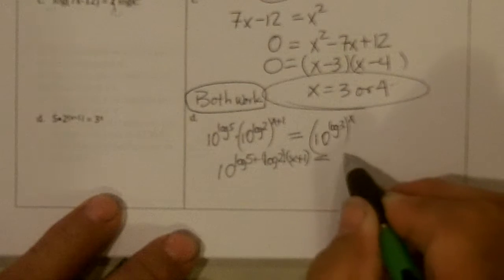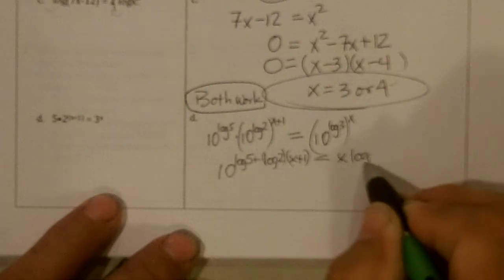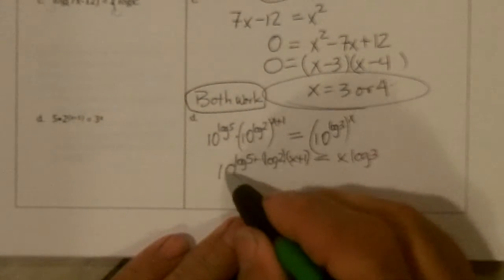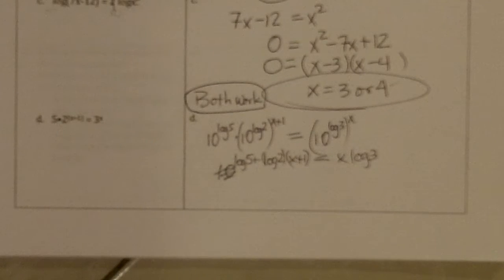Equals x times the log of 3. And 10 to that, and so they both will be to the 10s, so I can drop the 10s.